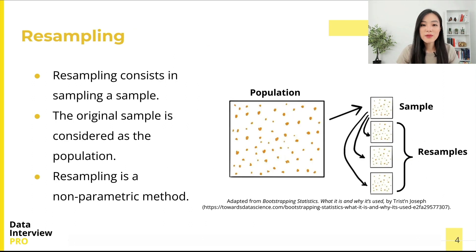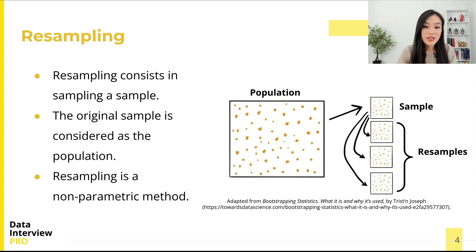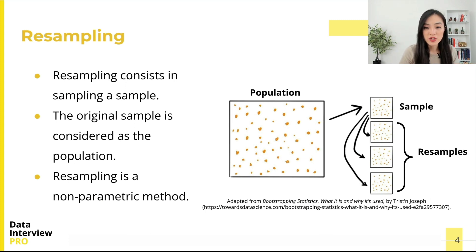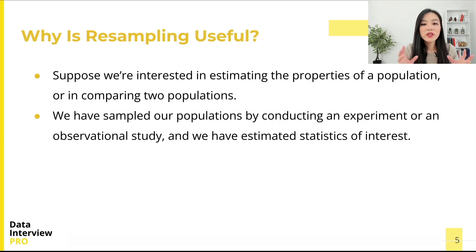Resampling consists of sampling a sample — the result is a sample of the original sample. So in resampling, the original sample is treated as the population. Resampling is a non-parametric method.